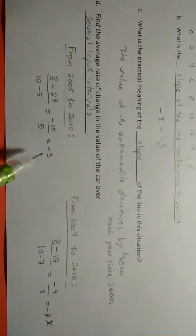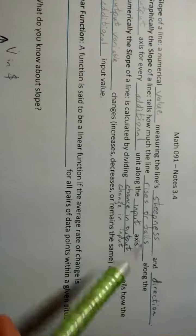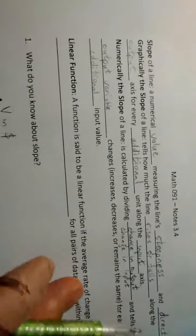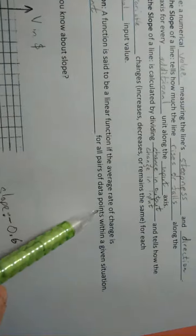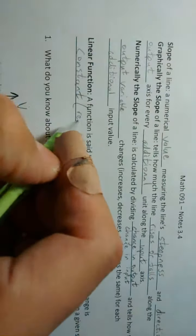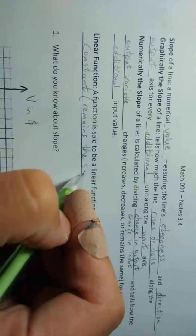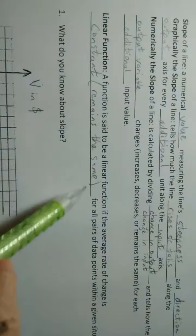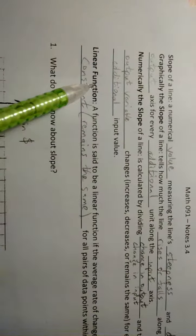And that's the definition you're going to read about, is that a function is said to be a linear function if the average rate of change is constant. It's constant for all pairs of data points within a given situation. And I'll say remains the same, you can think of it that way too. Or is the same for all pairs of points. So once you have that, then you know you have a linear function.